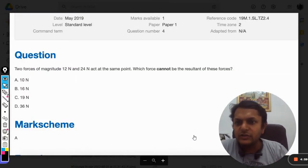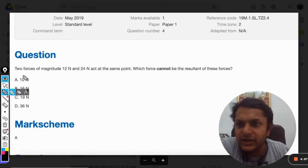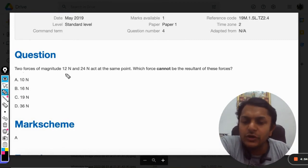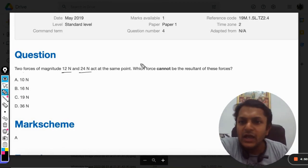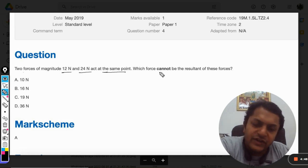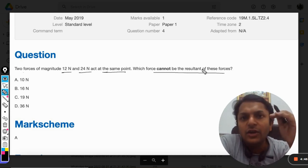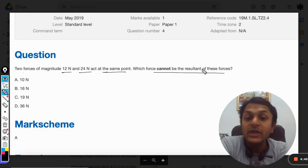Okay, so dear student, let us read this question now. Two forces of magnitude 12 newton and 24 newton act at the same point. Which force cannot be the resultant of these forces? So this question is from vectors.